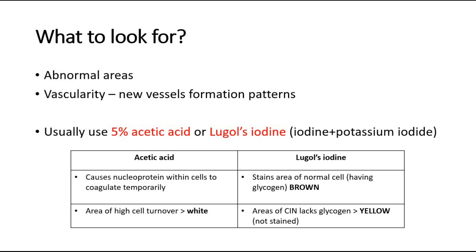For acetic acid, it causes the nuclear proteins within the cells to coagulate temporarily. In areas of high cell turnover, the areas will turn white in color. So after applying the acetic acid solution, the areas that turn white are the abnormal areas.